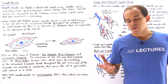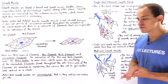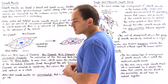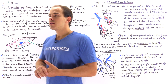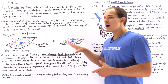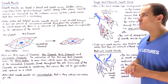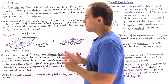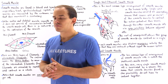In the previous several lectures, we discussed two types of muscles in the human body: the skeletal muscle and the cardiac muscle. The final type of muscle found in the human body is the smooth muscle, and this will be the focus of this lecture.